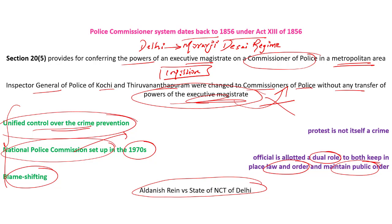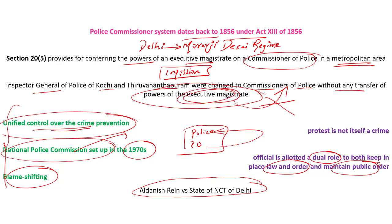The author brings in an argument that in the 7th Schedule of the Indian Constitution, police is a different entry and public order is a different entry — meaning public order need not be given to the police but should remain with the executive magistrate, since that was the original intent. The author also cites Kerala, where public order is still under the executive magistrate while crime is handled by the police. The author concludes that all public order powers should be given to the executive magistrate as in the dual control system, while only crime prevention powers should be given to the police officer.